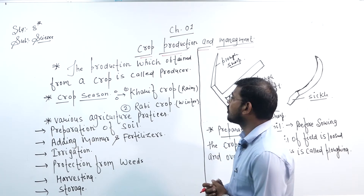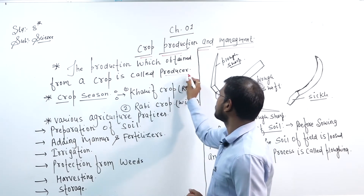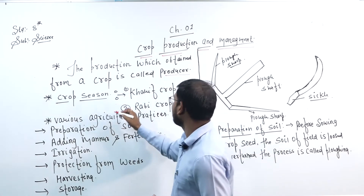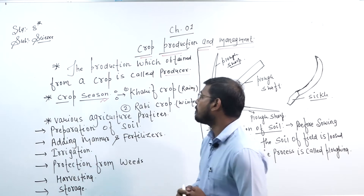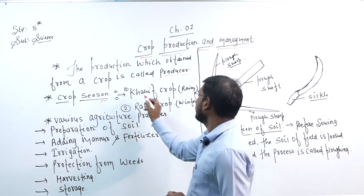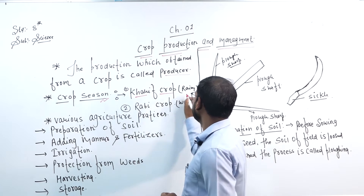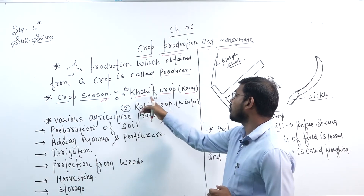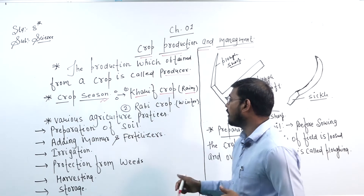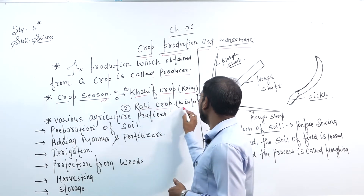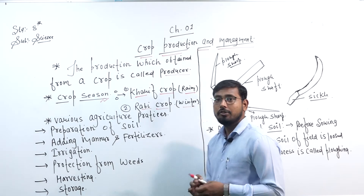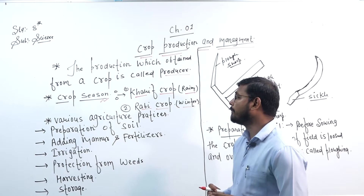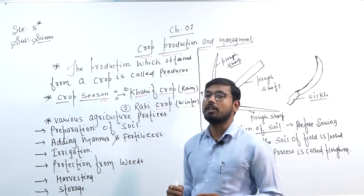The product obtained from a crop is called produce. Now let's look at crop seasons. There are two crop seasons. The first is the rainy crop season, which we call the Kharif crop, grown in the rainy season. The second is the winter season crop.